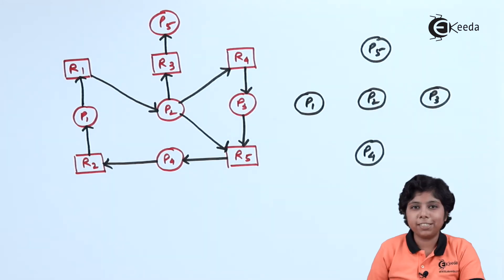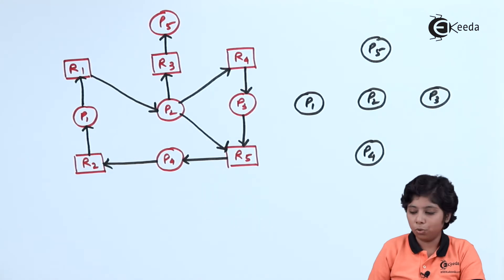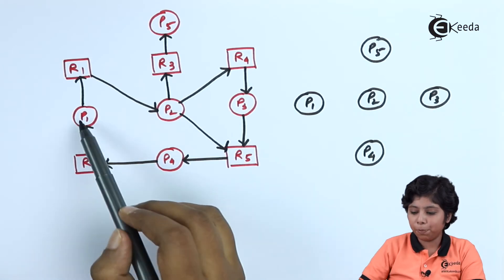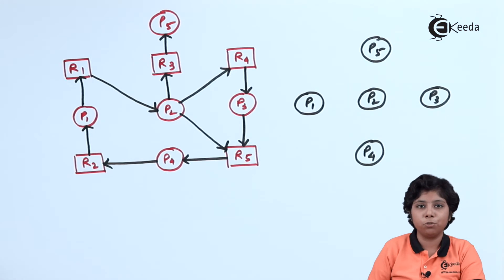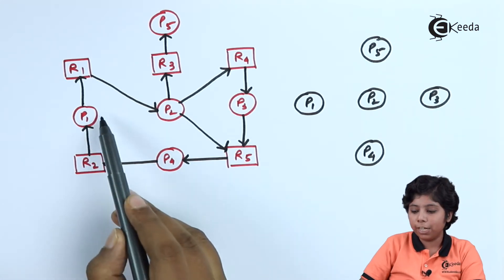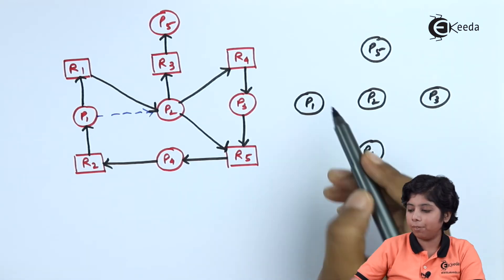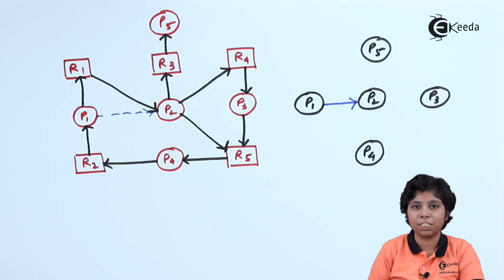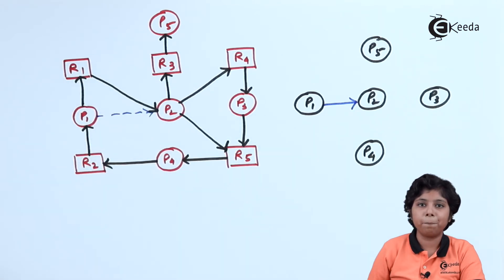Considering P1 and P2 in the resource allocation graph: process P1 holds resource R2, and process P2 is requesting resource R1. Process P1 is also requesting R1, which is allocated to P2. So process P2 must wait for P1, and there will be an edge in the wait-for graph from P1 to P2, since P1 is waiting on R1 which is held by P2.